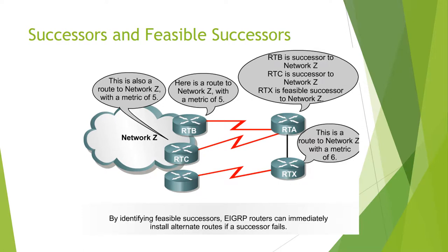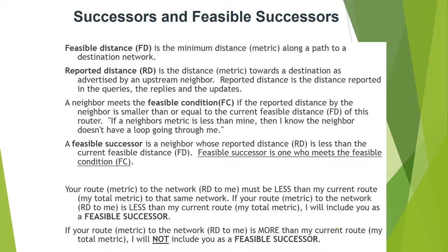There is also a route to network Z with a metric of 10. RTX is a route to network Z with a metric of 6.25. An EIGRP route can immediately install an alternate route if a successor fails — this alternate is called a feasible successor.